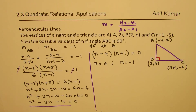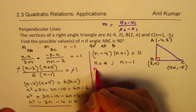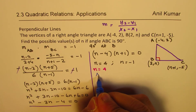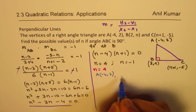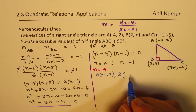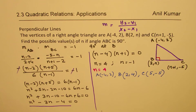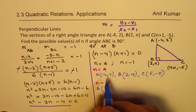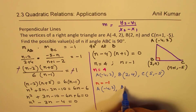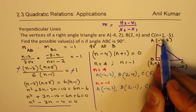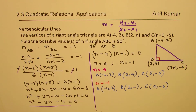We get two sets of points. If N = 4: A(−4, 2), B(2, 4), C(5, −5). If N = −1: A(−4, 2), B(2, −1), C(0, −5). These are the two possible triangles with a right angle at B.